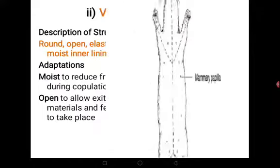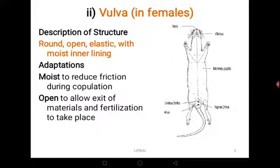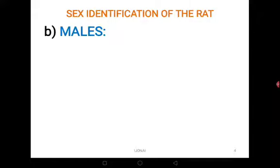In detail, the nipples are of two major groups: the pectoral group located on the chest area, and the inguino group located towards the groin. There are either four, five, or six pairs of nipples. We can now identify the female rat. The main structures are the nipples, the vulva, and the clitoris — the rest of the structures are shared between male and female, but those are unique mainly to females.